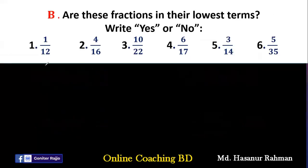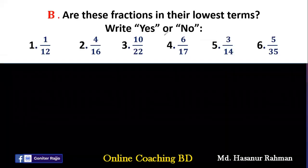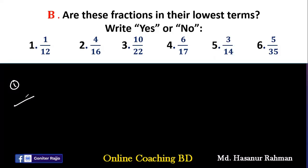Now Number B. Number B says: are these fractions in their lowest term? Answer yes or no. If we look at number 1, 1/12 — at the numerator we can see that is 1. That is already in its lowest term, so we cannot convert it into another lower form. So the answer is yes.